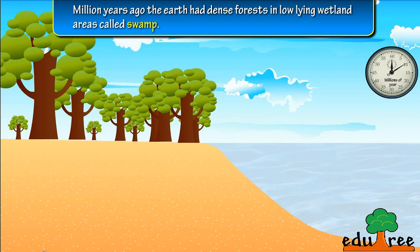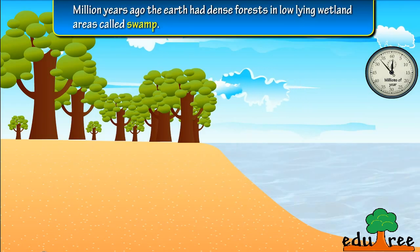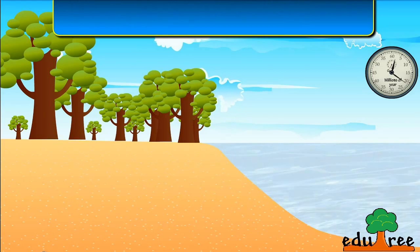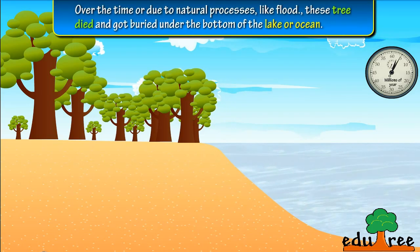Millions of years ago, the earth had dense forests in low-lying wetland areas called swamps. Over time, due to natural processes...